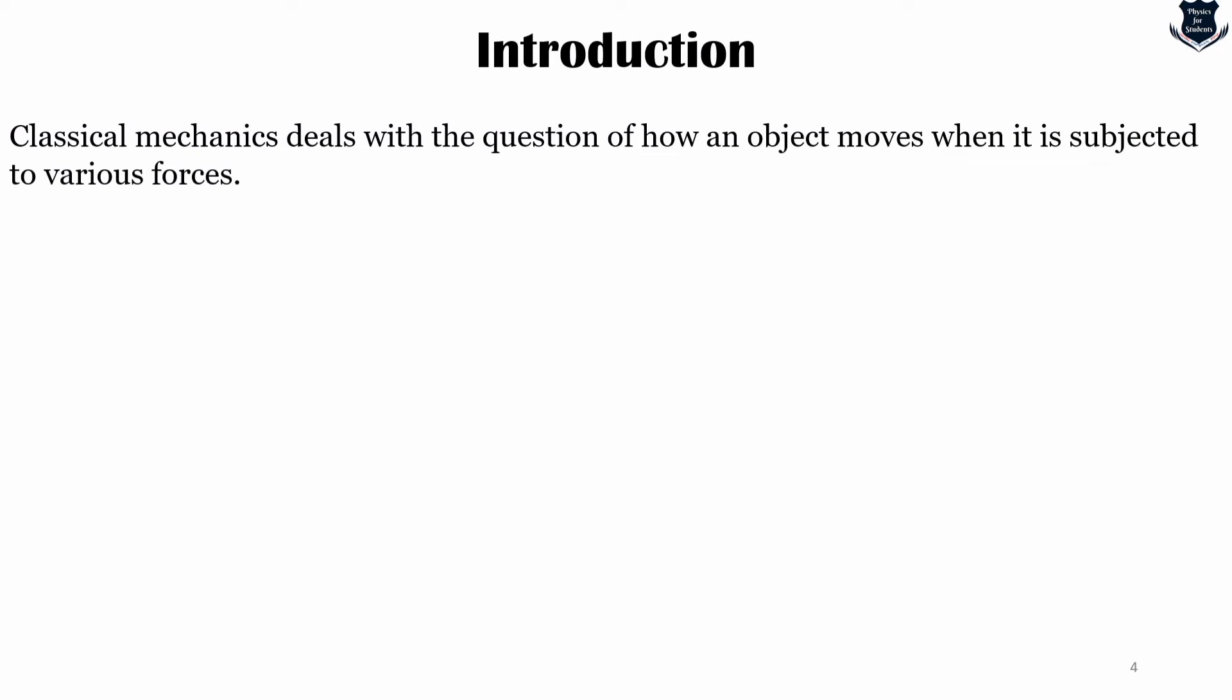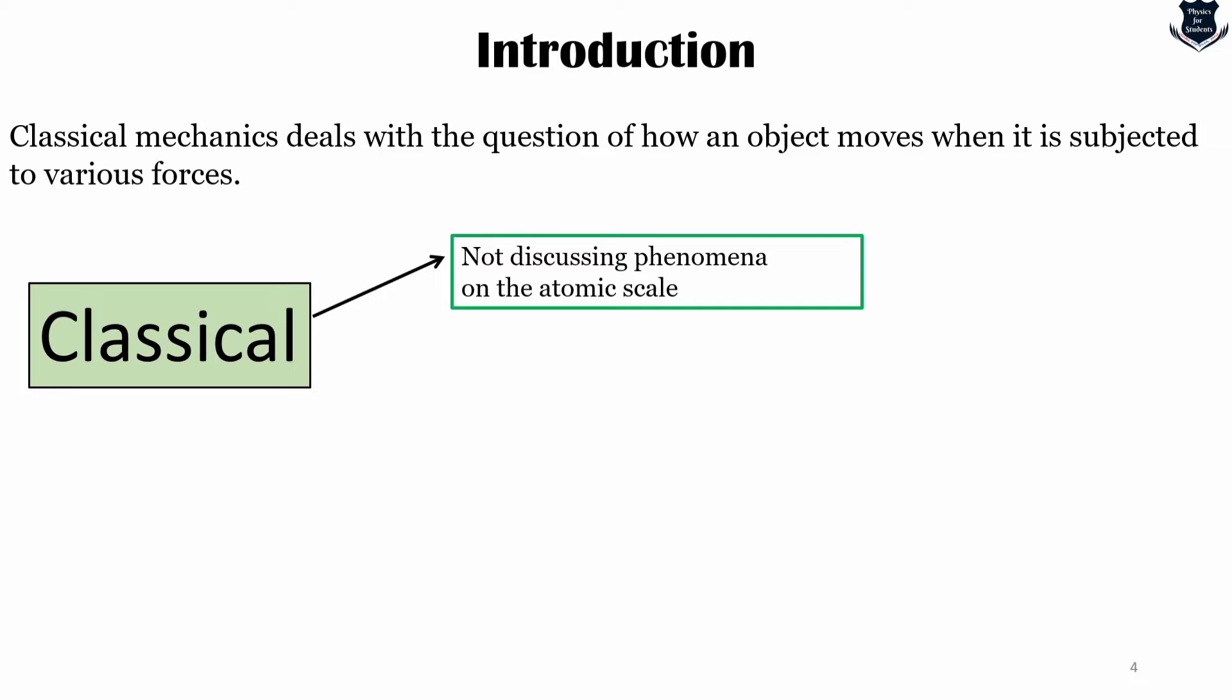In general, classical mechanics deals with the question of how an object moves when it is subject to various forces and also with the question of what forces act on an object which is not moving. The word classical indicates that we are not discussing phenomenon on the atomic scale and we are not discussing situations in which an object moves with velocity close to the speed of light.